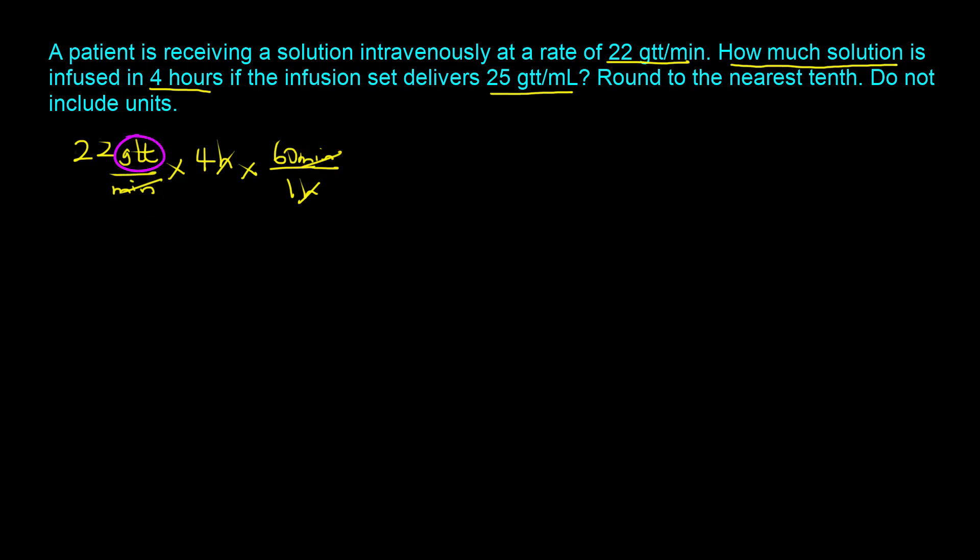We need to get rid of the drops from the numerator, so we need a quantity that has drops in it. That's where the calibration or drop factor will become important. Because we're looking for volume, we're going to flip the drop factor.